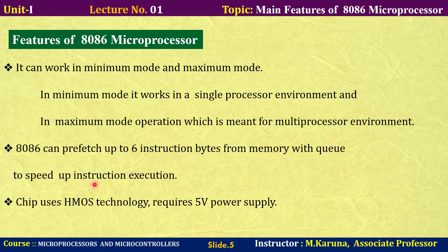Because of this queue, the speed of execution is improved. The 8086 uses HMOS technology — high-density metal oxide semiconductor technology — and it requires a 5-volt power supply to operate.